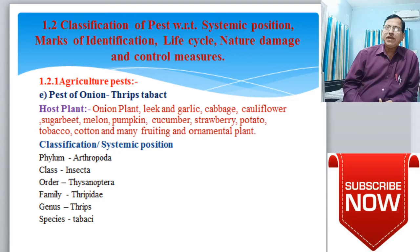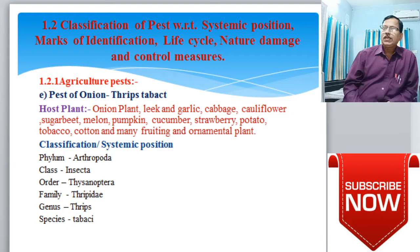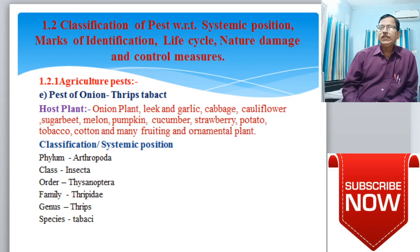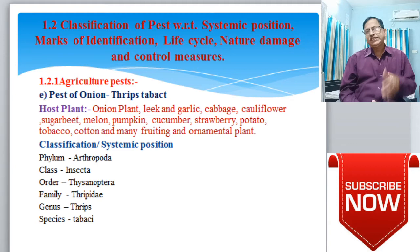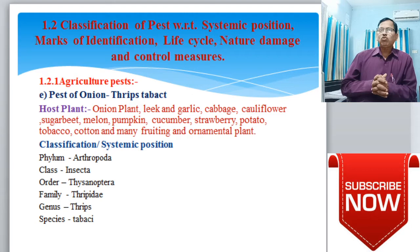First, we should know about the host plants of this pest. Thrips tabaci is mainly adapted to onion plants, leek, garlic, cabbage, cauliflower, sugar beet, melon, pumpkin, cucumber, strawberry, potato, tobacco, cotton, and many ornamental plants. Out of these host plants, it mainly attacks onion plants.